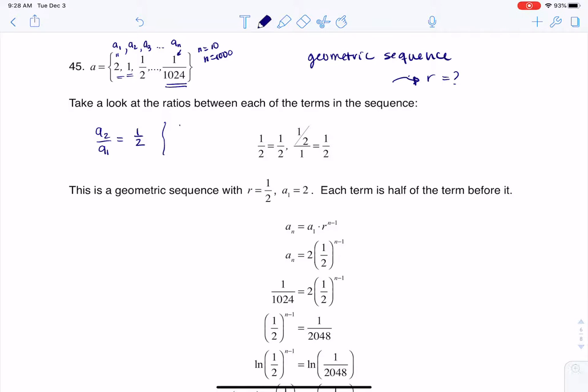So if I looked at the ratio then of a sub 3 to a sub 2, that would be 1 half over 1, that is still 1 half. So that's what I'm getting here, that r is equal to 1 half, and we know a sub 1 is equal to 2.